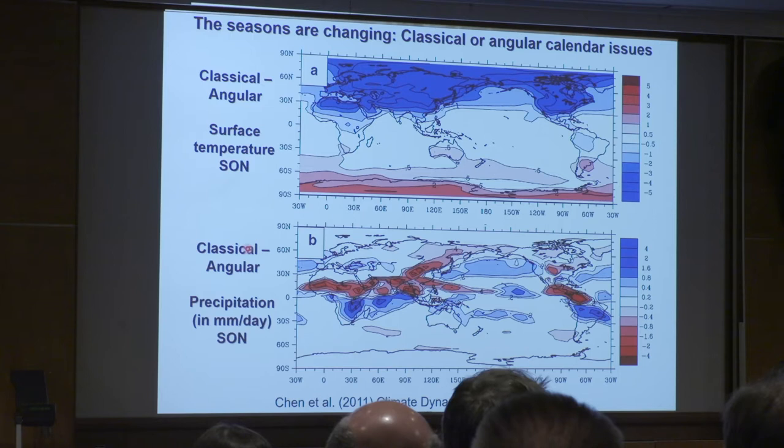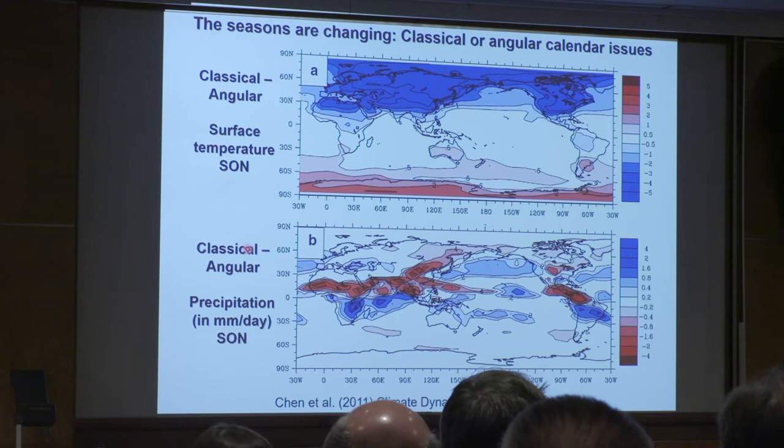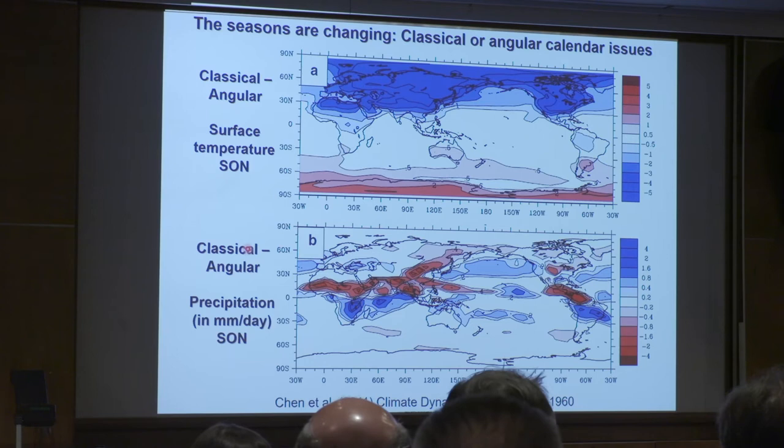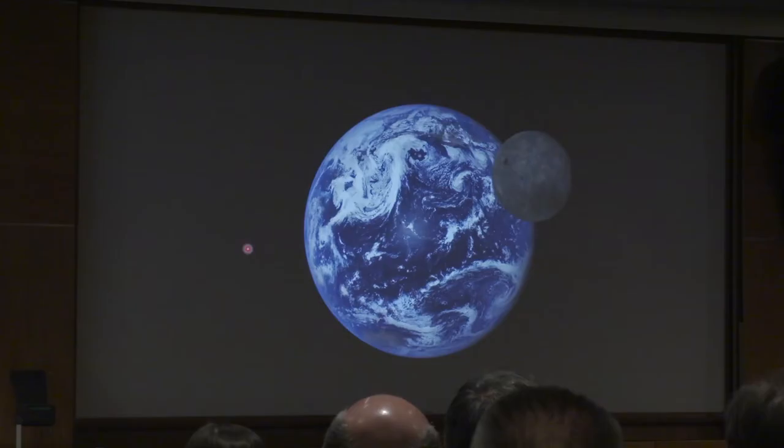In terms of actual output, if you use a different definition, the top panel shows you the temperature differences using classical minus the angular definition — changes of plus or minus 5 degrees Celsius depending on which angular definition you use. And for rainfall, it's a very important quantity for agriculture and for studying the monsoon. These are very important issues. None of the climate models in GCMs have this definition correctly defined. Tell that to the IPCC, please.